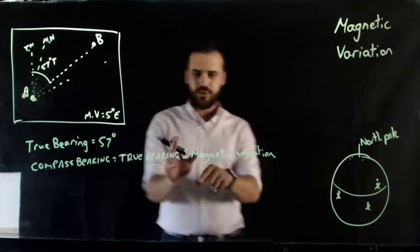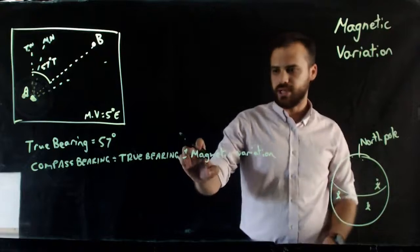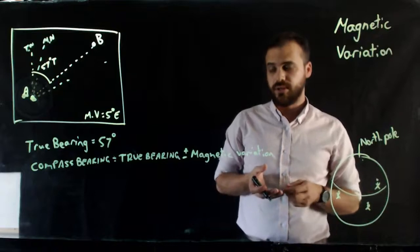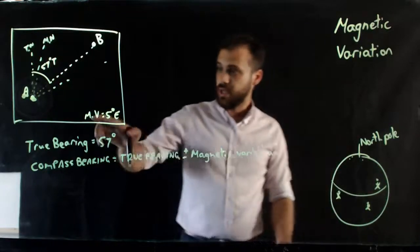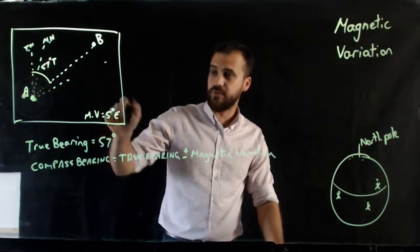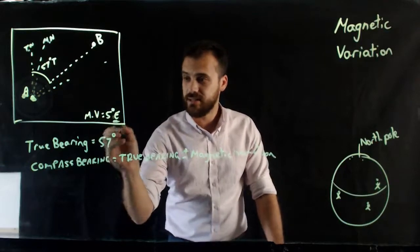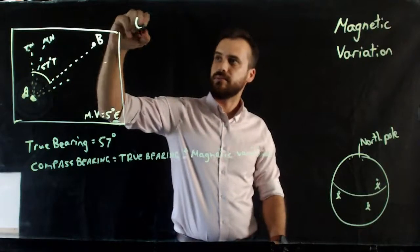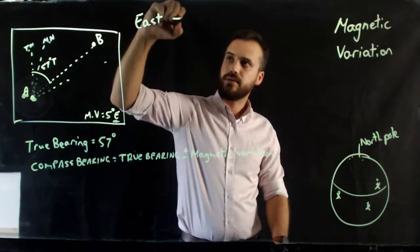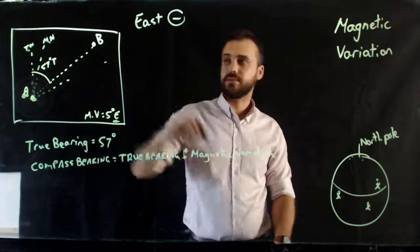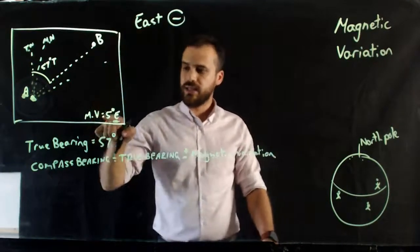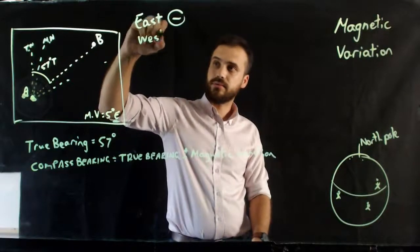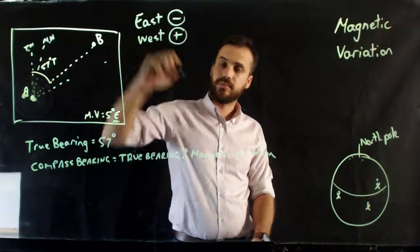Now you've seen I've put the symbols plus or minus, and you're going to have to choose which one of those to use. Now, if it's a magnetic variation of 5 degrees east, you would use minus. So I'm going to write that up here. East minus. And if it's a magnetic variation of, say, 5 degrees west, it's a plus.